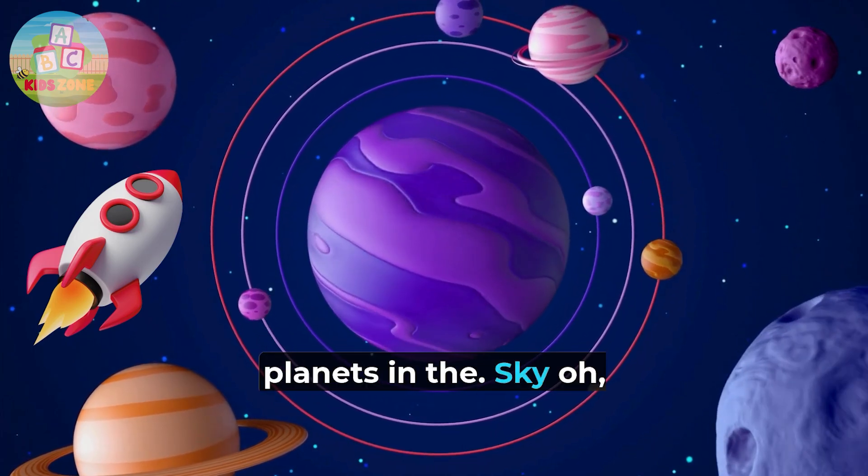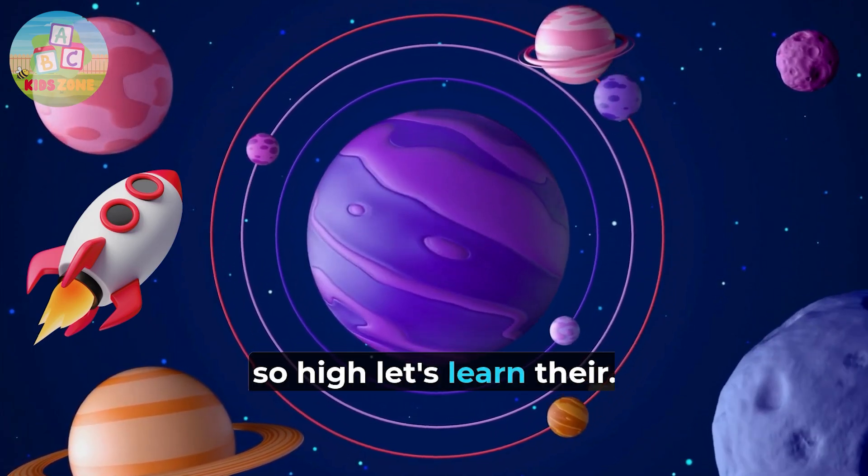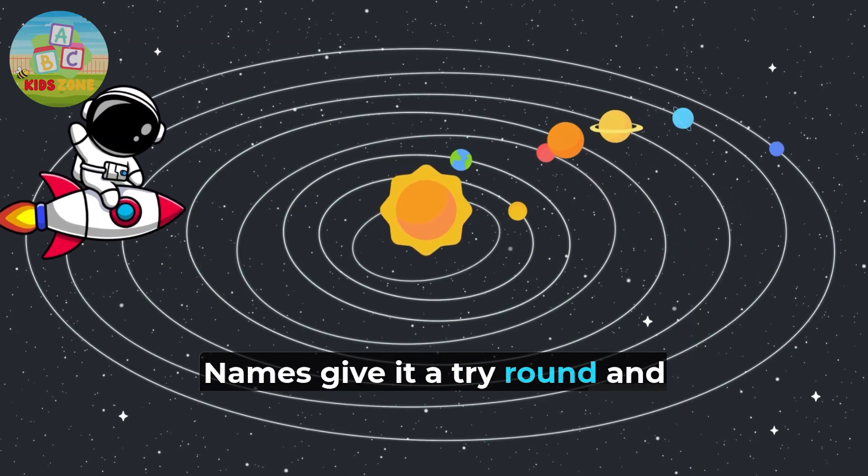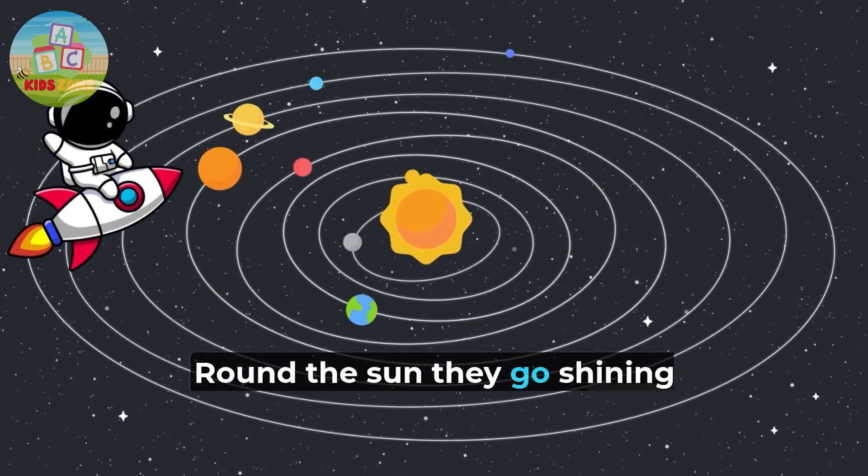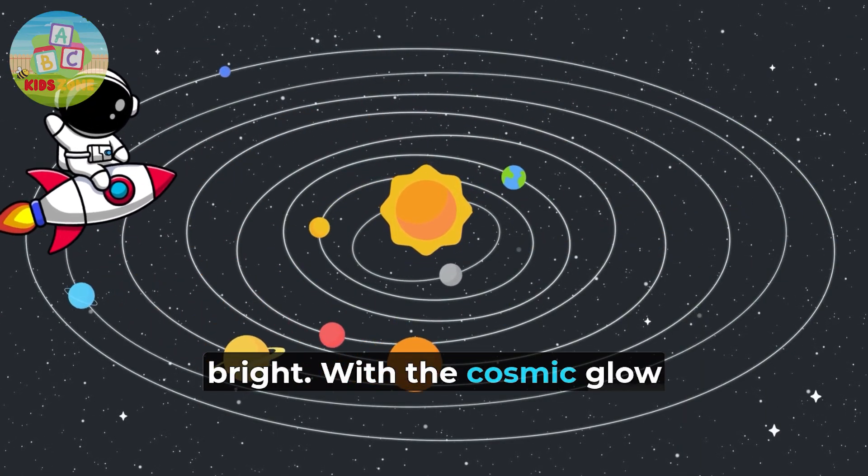Planets in the sky, oh so high. Let's learn their names, give it a try. Round and round the sun they go, shining bright with the cosmic glow.